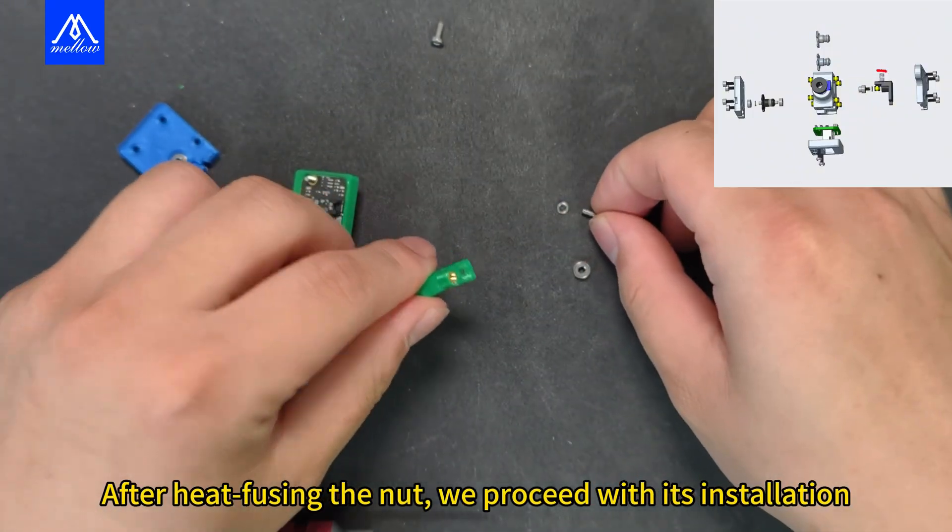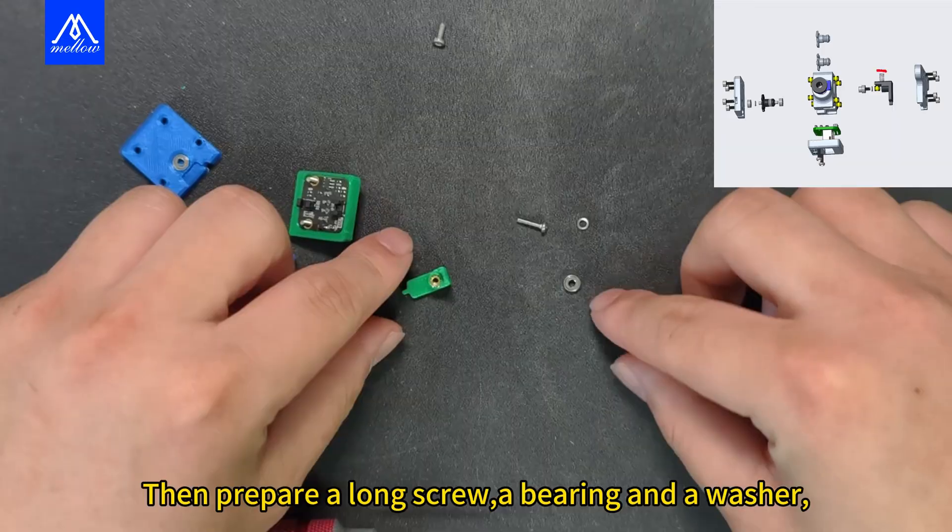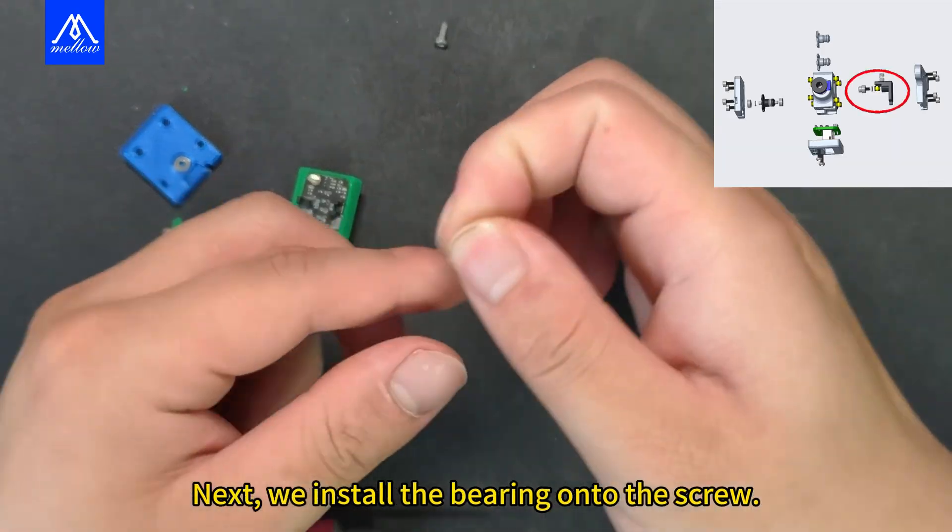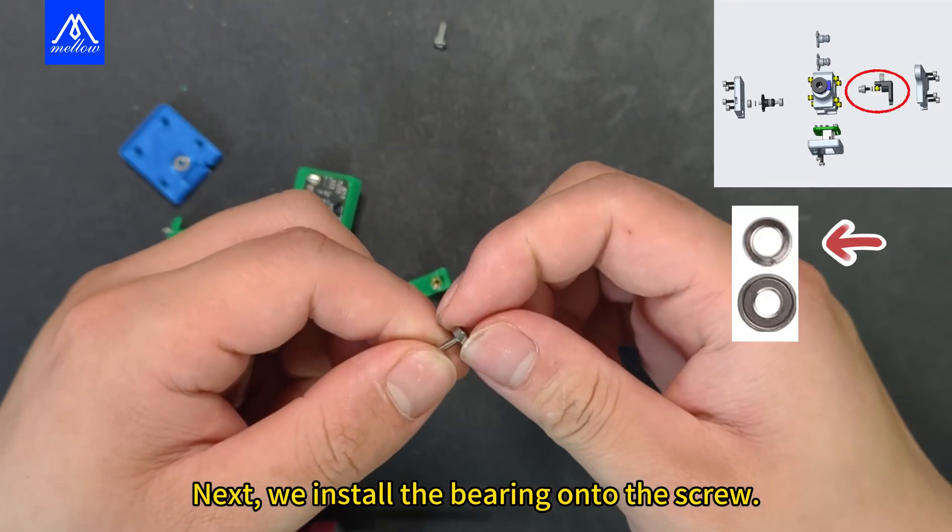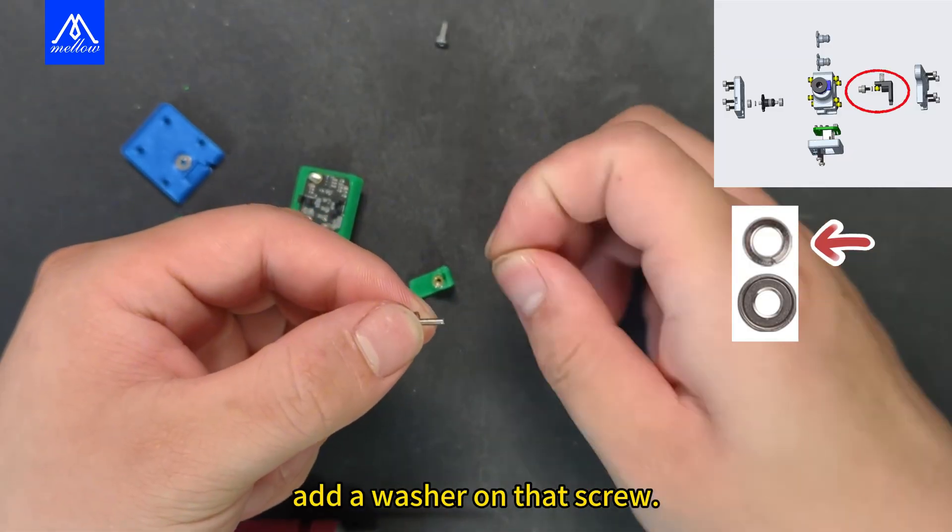After heat fusing the nut, we proceed with its installation. Then prepare a long screw, a bearing, and a washer. Next, we install the bearing onto the screw. Add a washer on that screw.